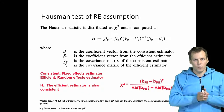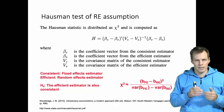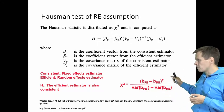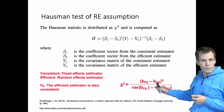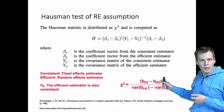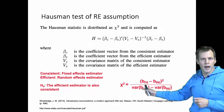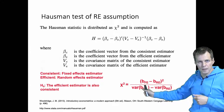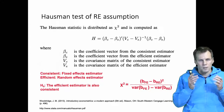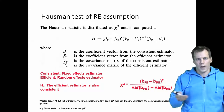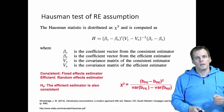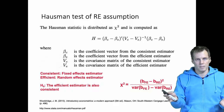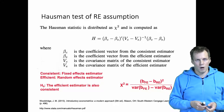The Hausman test basically asks: can the difference between the two estimates be explained by the efficiency difference alone? If the difference between the two estimates is greater than what can be expected based on the efficiency difference, we conclude that the difference in efficiency cannot solely explain it, and therefore the random effects estimator must be inconsistent for that particular scenario.